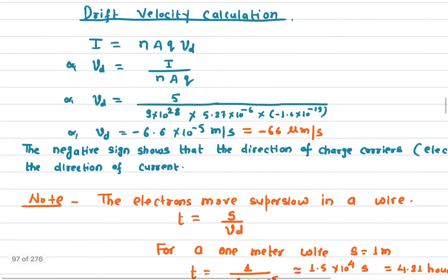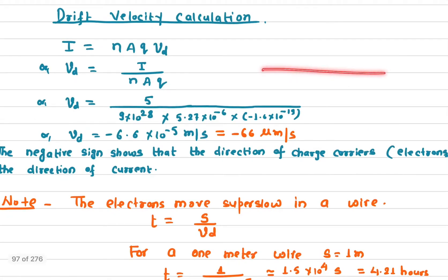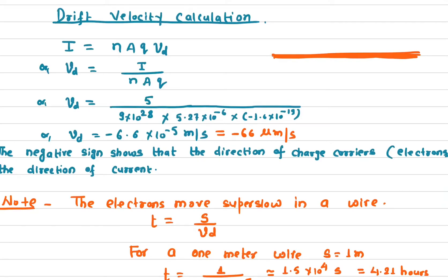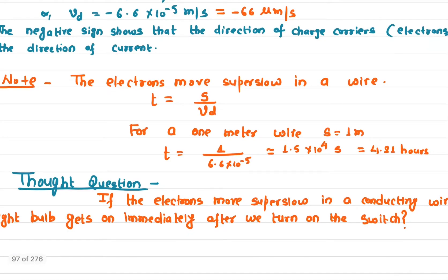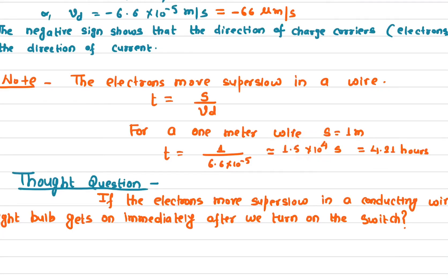Now I have a question for you. Let's say you have a one-meter wire. How long does it take for the electrons to move from one end to the other? The time is distance divided by velocity: one meter divided by the drift velocity of 6.6 times 10 to the negative 5 meters per second.